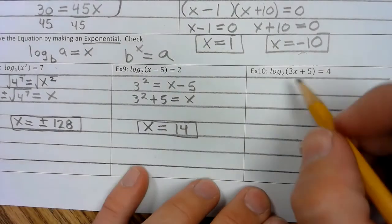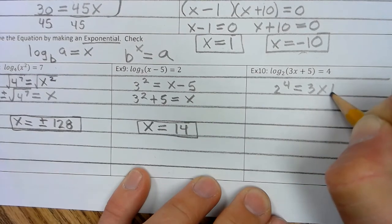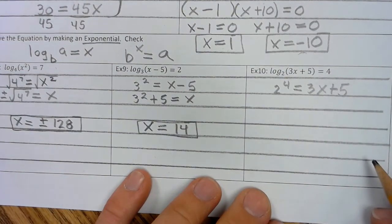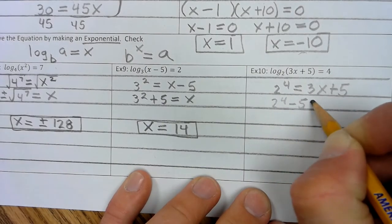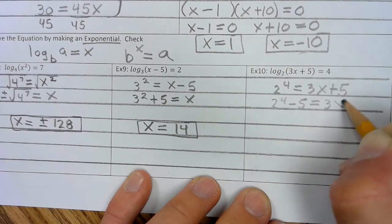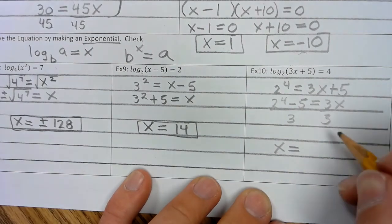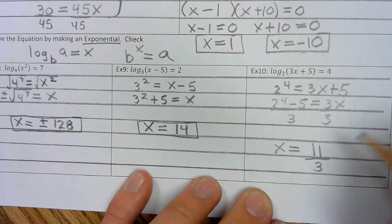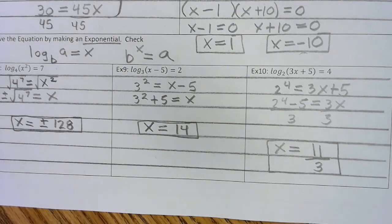Example 10: that's 2 to the 4, so x equals 3x plus 5. Subtract from both sides: 2 to the 4 minus 5 equals 3x. Divide by 3: x equals 11 thirds. I would recommend, if you haven't been going through all along, go back and plug each number in to make sure none of the answers are extraneous solutions.